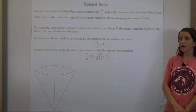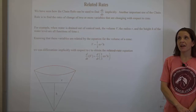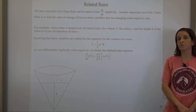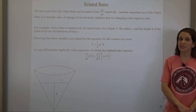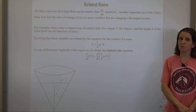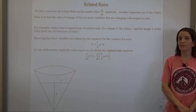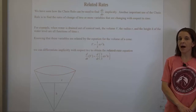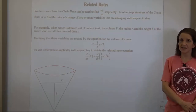In related rates, every variable is going to be changing with respect to another variable — usually time for a real-world situation. So every time we get to a variable, whether that be volume, radius, or height, we're going to need to remember the chain rule — that it really changes over time — and to multiply by d(variable)/dt, that derivative of the inside.